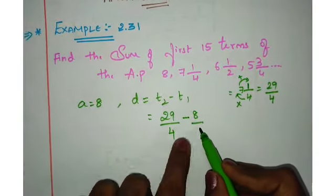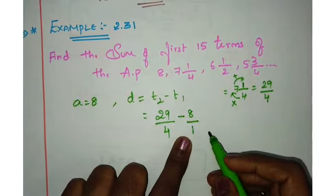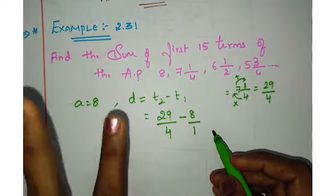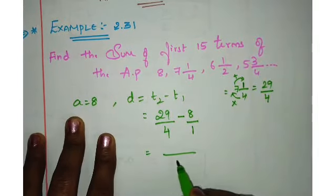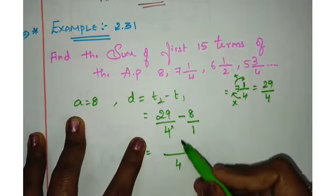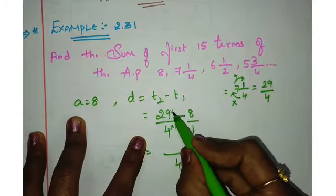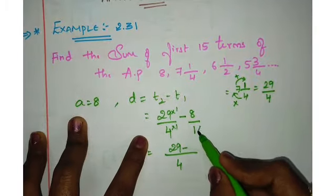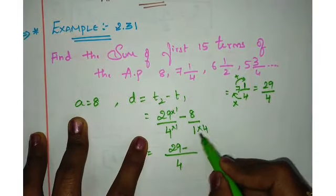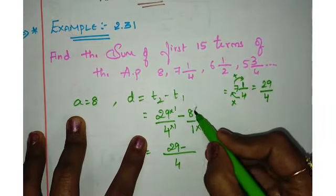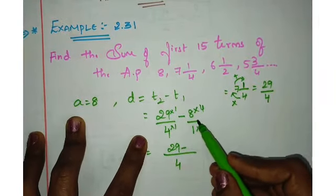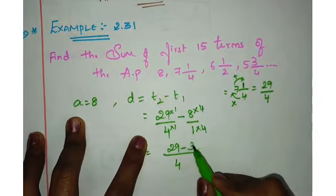So here, we call it 1. So 4 and 1 is 4. What to multiply every 4 is 1. When you multiply all the numerator, we add 29 into 1. So it is 29 minus 1 to 4. Where to multiply all the 4 is 4.